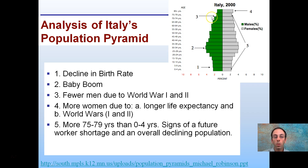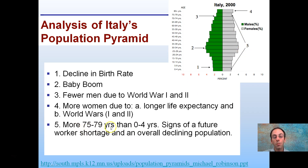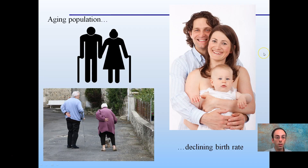Number three: we're noticing fewer men due to World War I and World War II compared to females. That's the reason for the lower percentage of males versus females in that particular age group. Number five: there are more 75 to 79 year olds than 0 to 4 year olds — a sign for the future of worker shortage and overall declining population. Comparing different regions of this population pyramid shows an aging population and a declining birth rate. This is in general what's occurring in Italy.